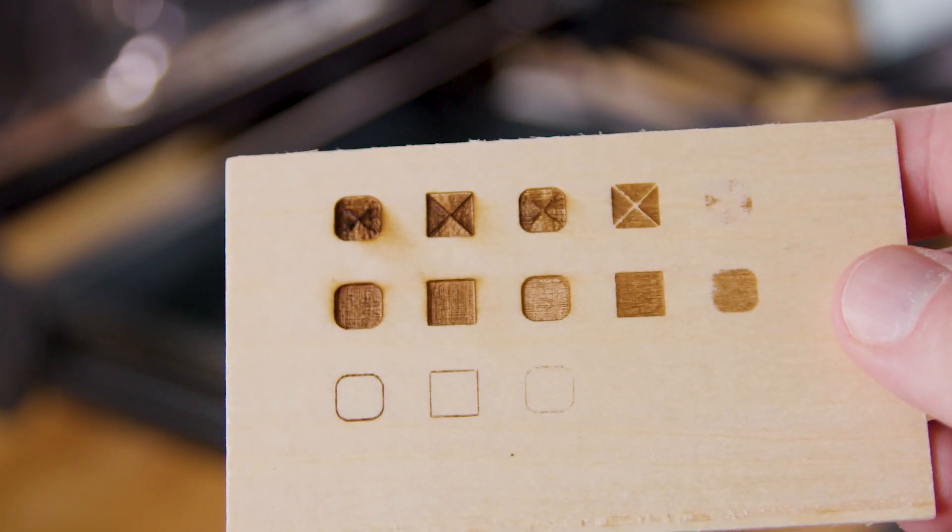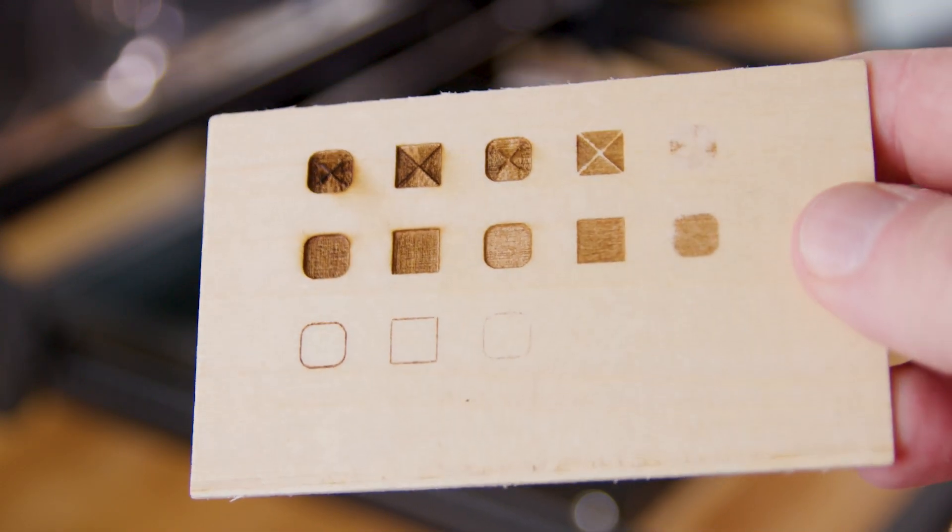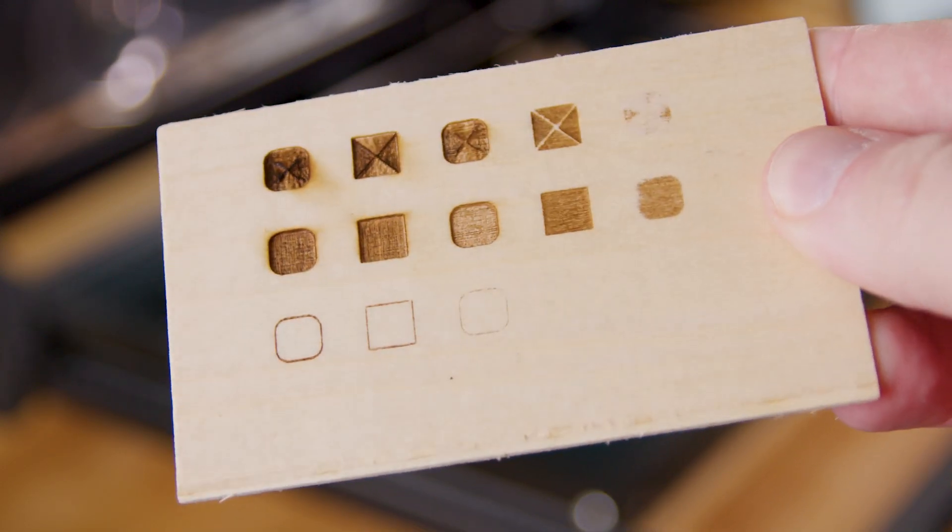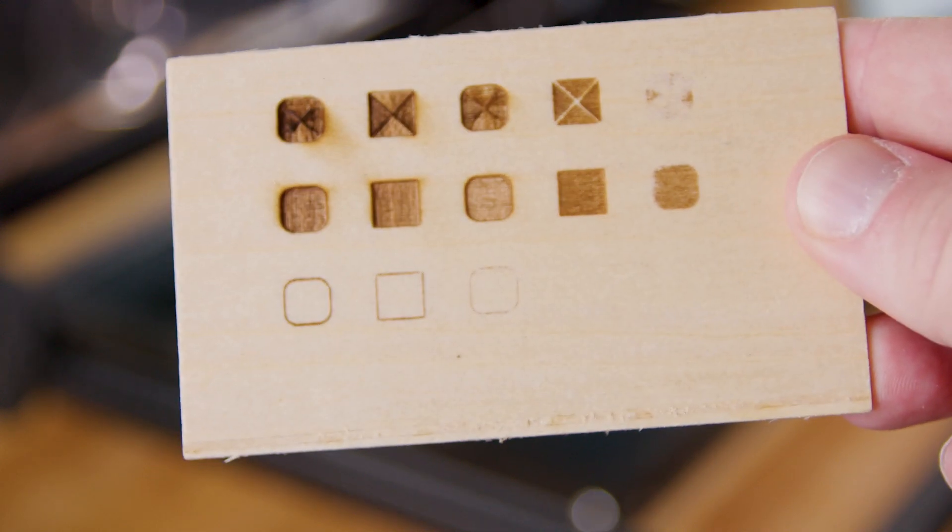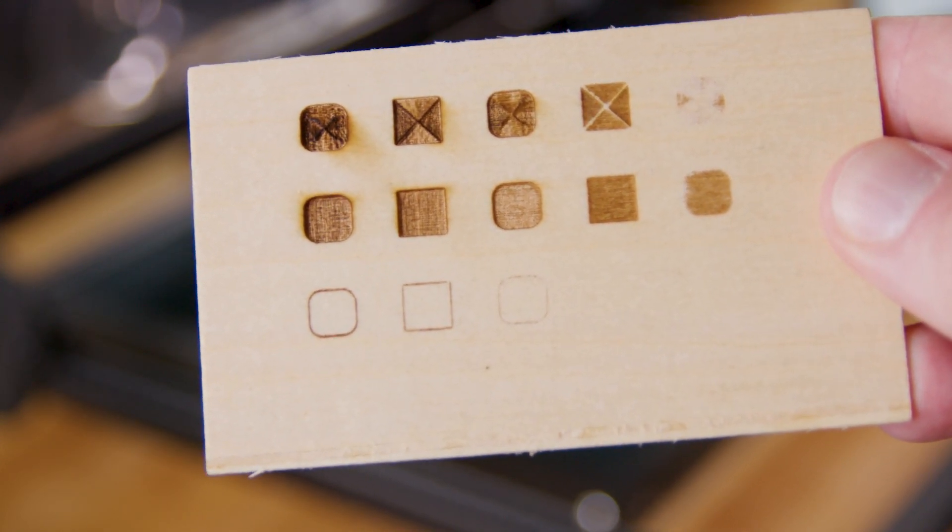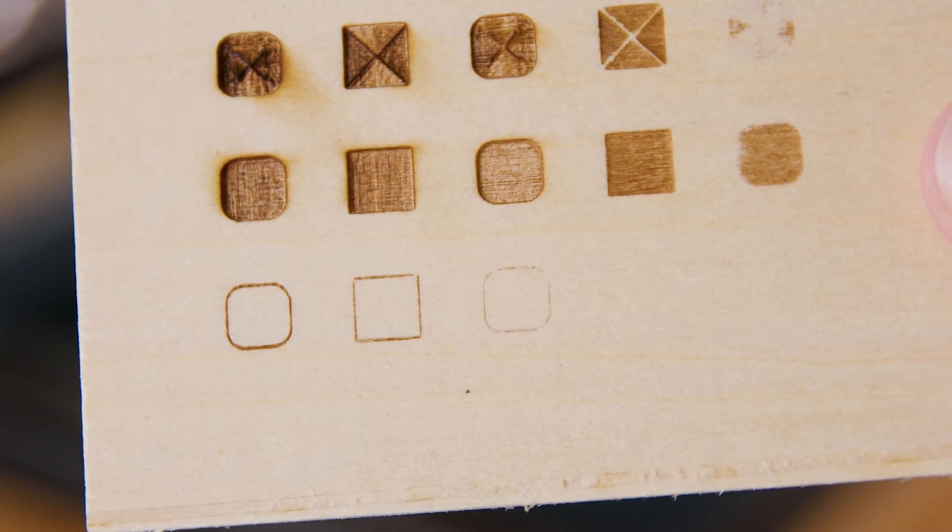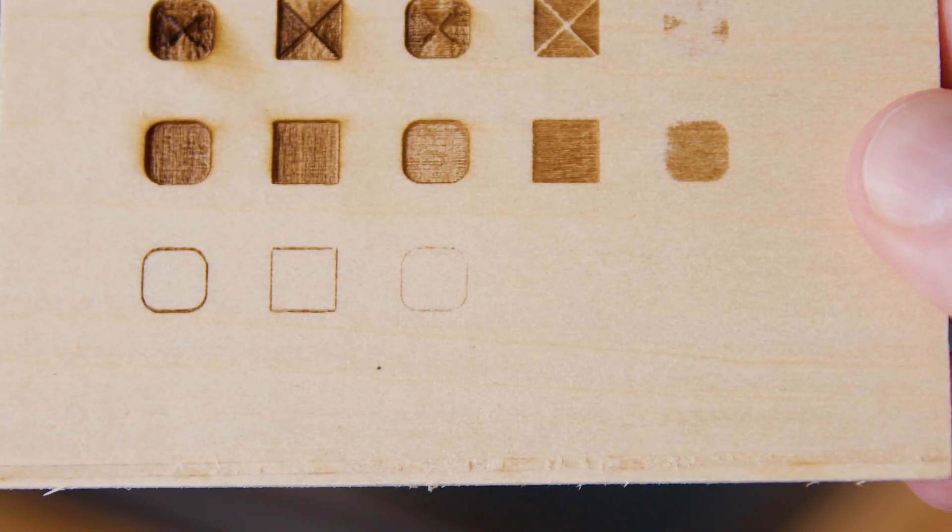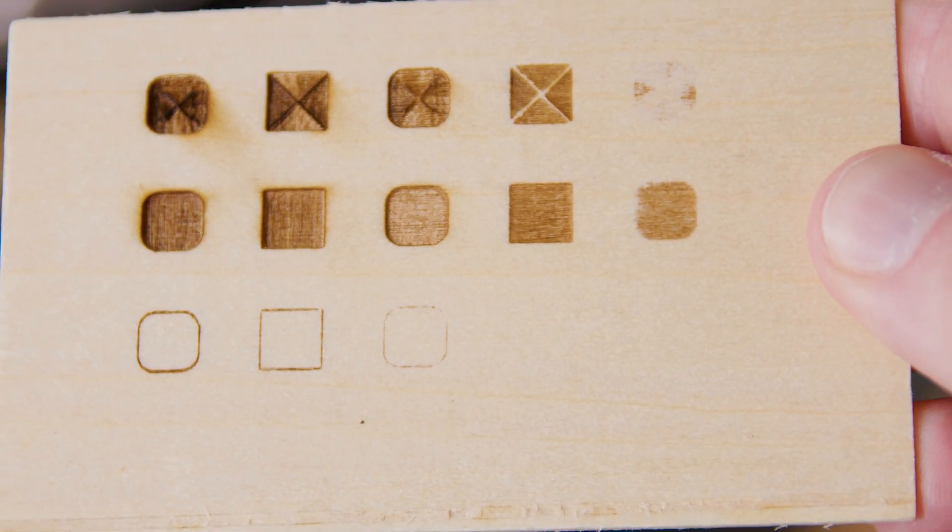Now, the material I'm using here is, I believe, a bass wood or a balsa wood of some kind. It's a very soft piece of wood. The surface finish is actually not too bad. I actually prefer the fill pattern the best, as it seems to be the most consistent, if you're going to use it for engraving.